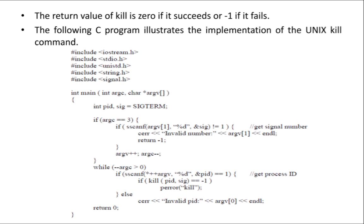To send the signal to a particular process you need the signal number. Then you increment argv and decrement argc to move to the next slot. When argv[1] is fetched for the signal number, the argument count goes from 3 to 2. In the while loop, while argc is greater than 0, at least one argument must remain. You get the process ID from argv — that process ID is stored in the array argv.